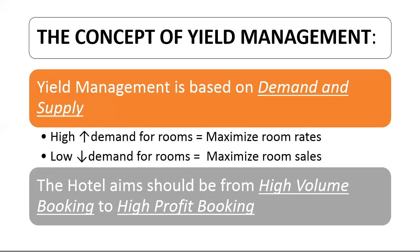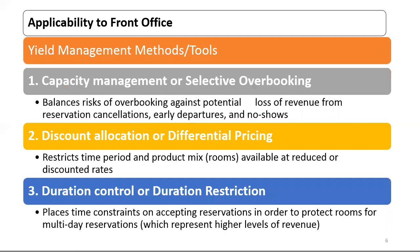Now let's see the application of yield management in front office. Yield management seeks to maximize revenue by using forecast information with the help of three options. First: capacity tools or capacity management, also called selective overbooking — balancing the risk of overbooking against potential loss of revenue from reservation cancellations, early departure and no-shows. Capacity management involves various methods of controlling and limiting room supply.